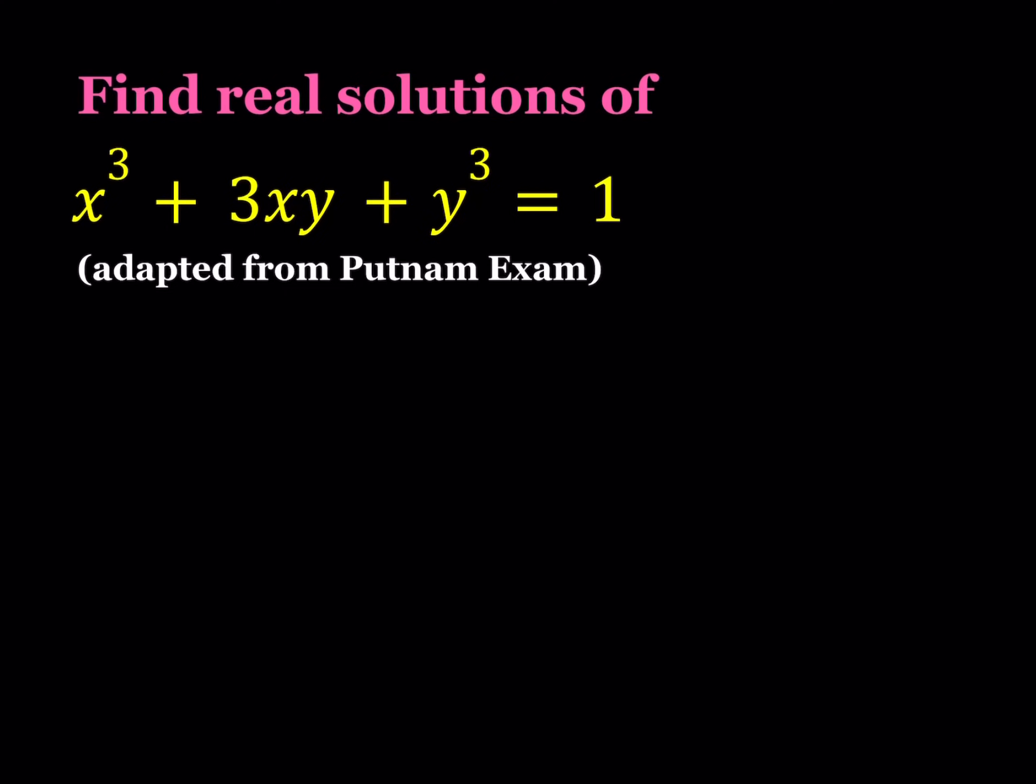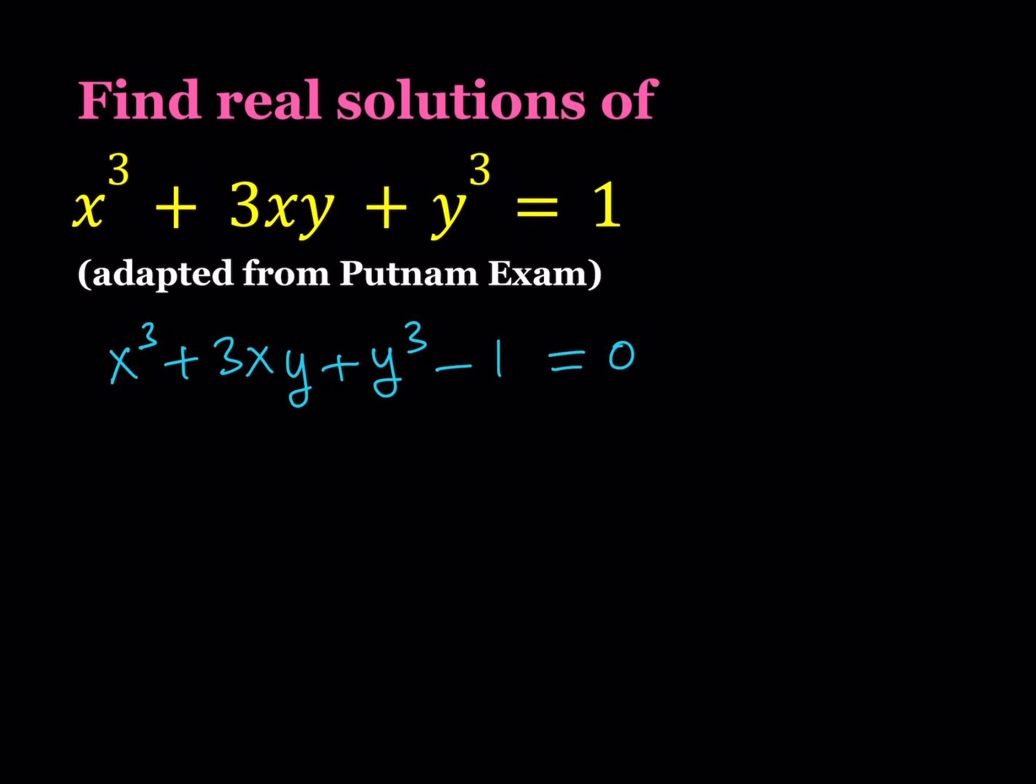We're going to be putting everything on the same side. So I will subtract 1 from this and set it equal to 0. Now I'm going to manipulate this a little bit to put it in a form that I want it to be because I will use an identity. Let's write this x cubed and y cubed together, and then I'll just write this as plus negative 1. And then instead of 3xy I'm going to write minus 3xy multiplied by negative 1. Obviously they are equivalent and the whole thing is equal to 0.